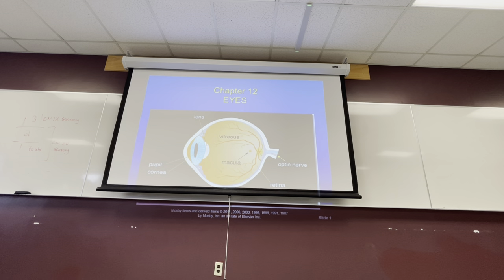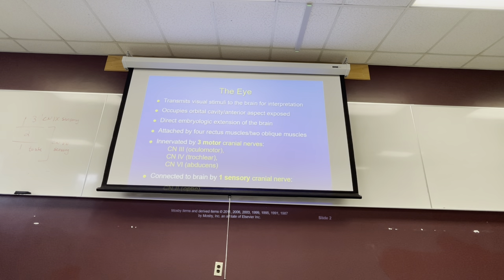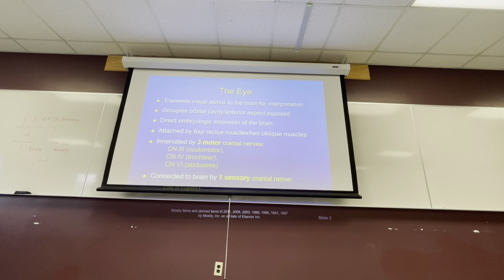Wherever we stop, we can continue after the test next week. So the eyes — obviously it's a very important organ because without it we cannot see. With the head and neck we learned two nerves — cranial number five and cranial number seven. We're going to be learning four cranial nerves right now.